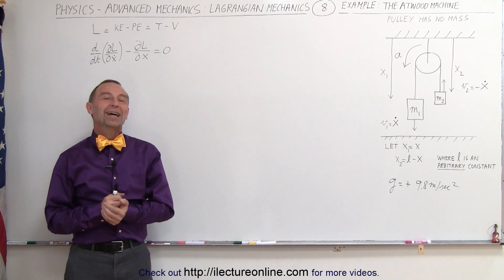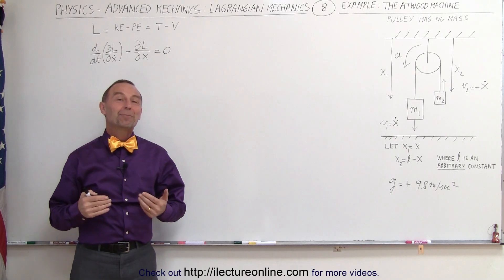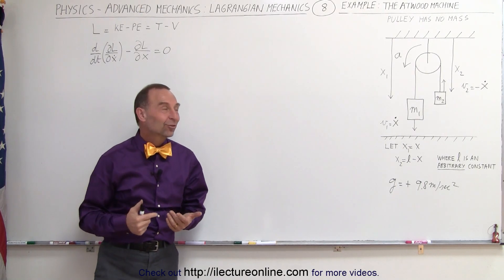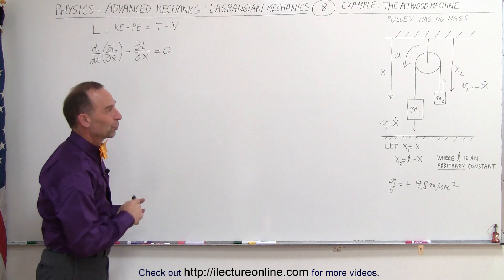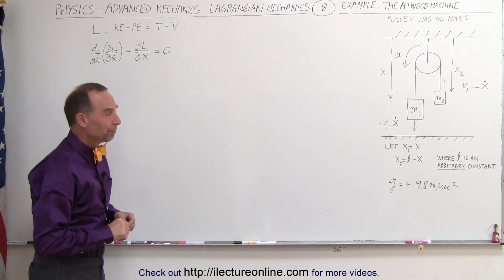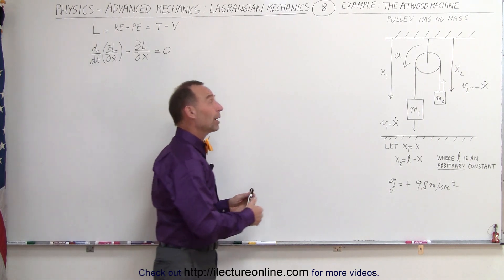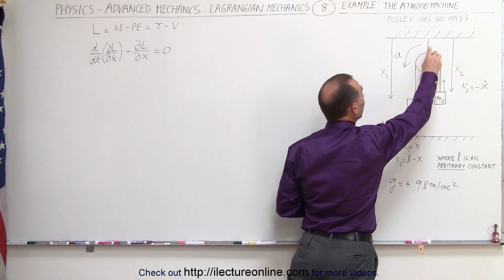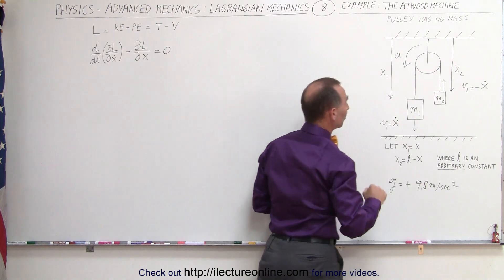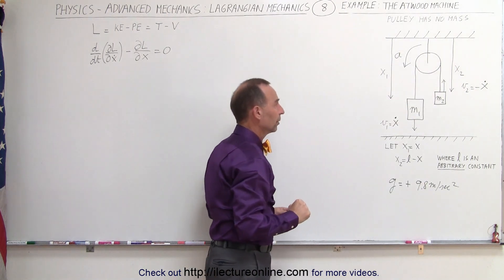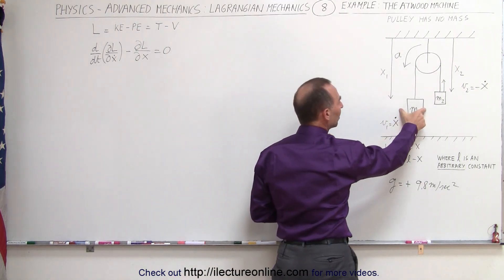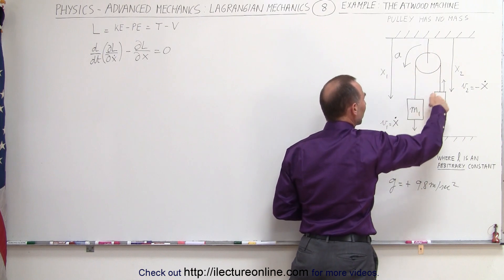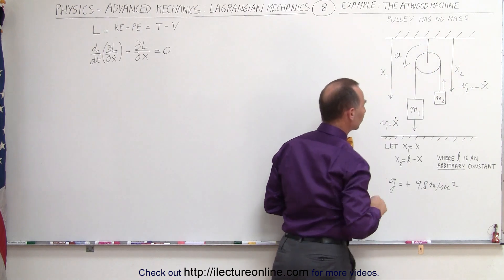Welcome to ElectronLine. In this example we're going to use the Lagrangian techniques to solve the Atwood machine problem. It's a simple Atwood machine problem with the mass of the pulley being equal to zero. Notice m1 is assumed to be larger than m2, and we expect the acceleration to be in that direction.